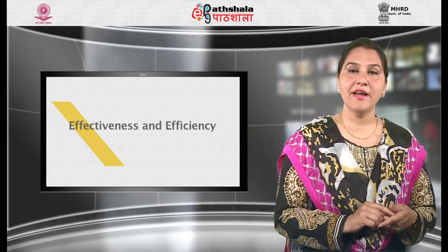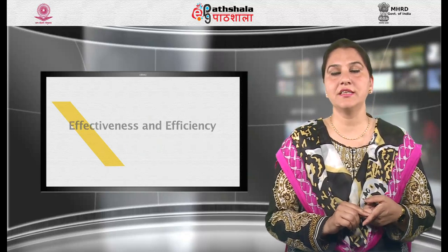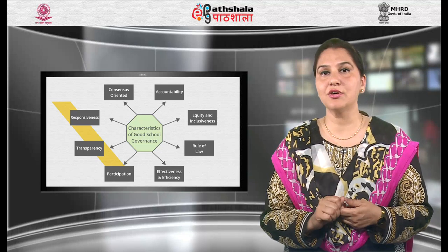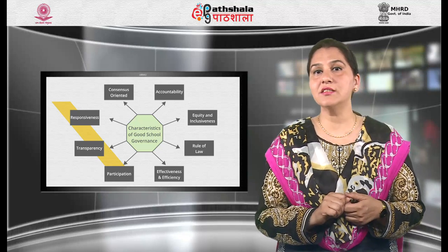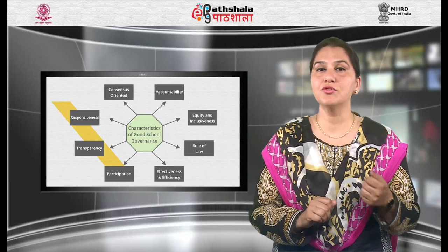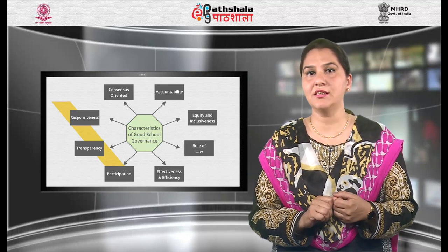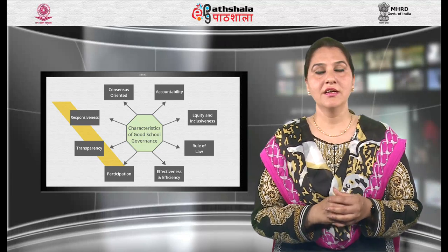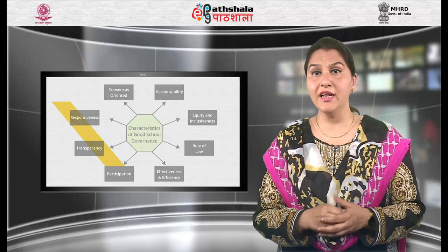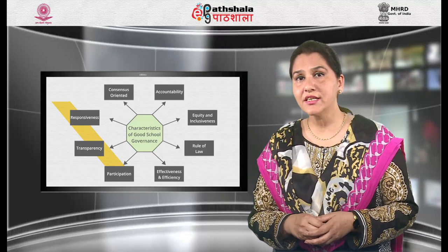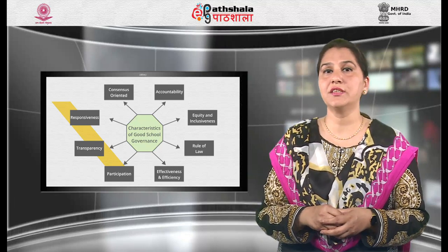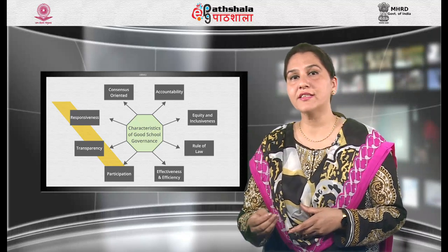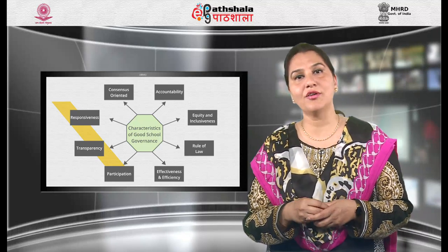This requires all groups, but particularly the most vulnerable, to have opportunities to improve or maintain their well-being. Seventh is effectiveness and efficiency. The concept of efficiency in the context of school governance also covers the suitable use of resources and protection of the environment. Eighth is accountability. In general, an organization or institution is accountable to those who will be affected by its decisions or actions.